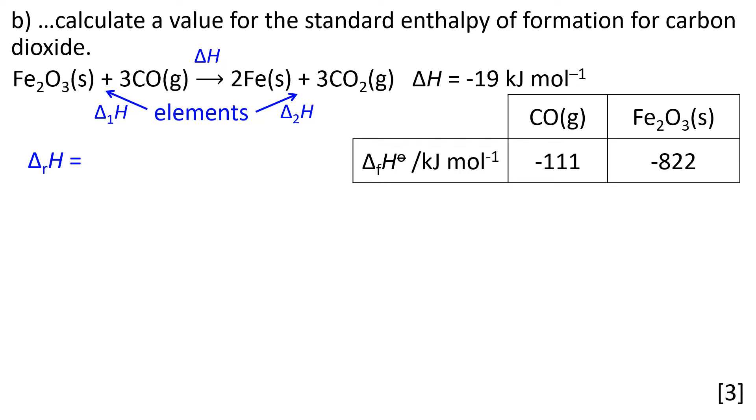I've labeled ΔᵣH or ΔH, the enthalpy of reaction going from left to right. Δ₁H and Δ₂H can both be thought of in terms of those standard enthalpies of formation. The enthalpy for the reaction going from left to right is -19 kJ mol⁻¹, that's given to us in the question.